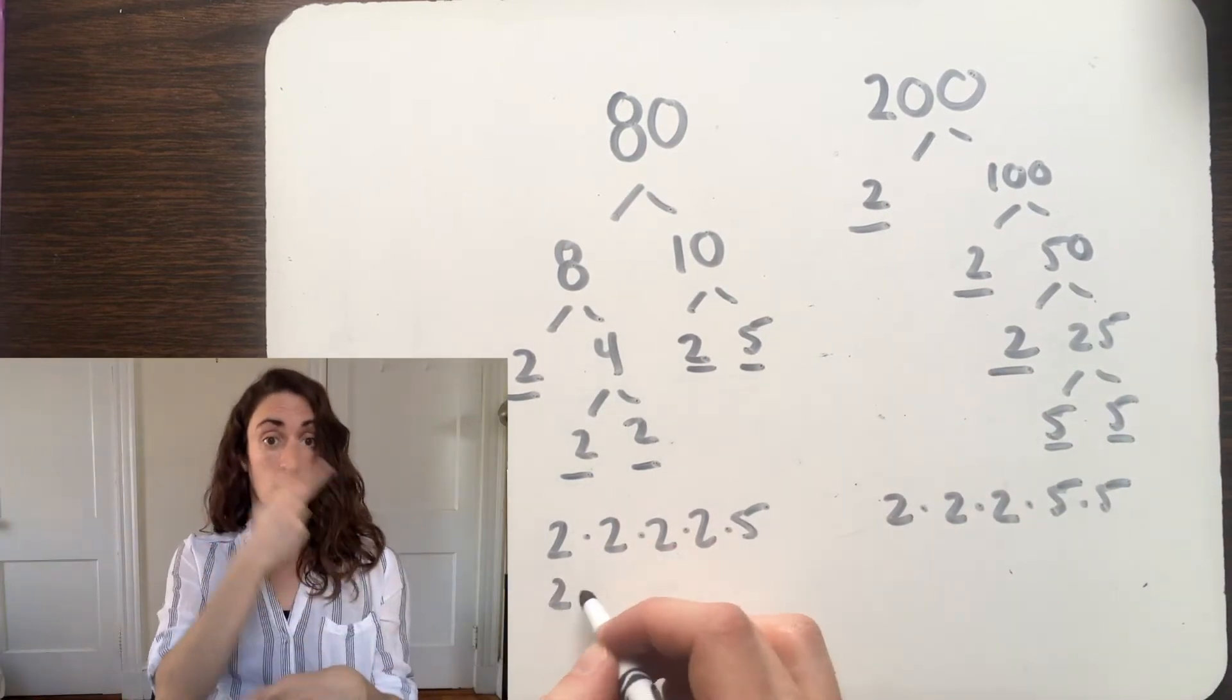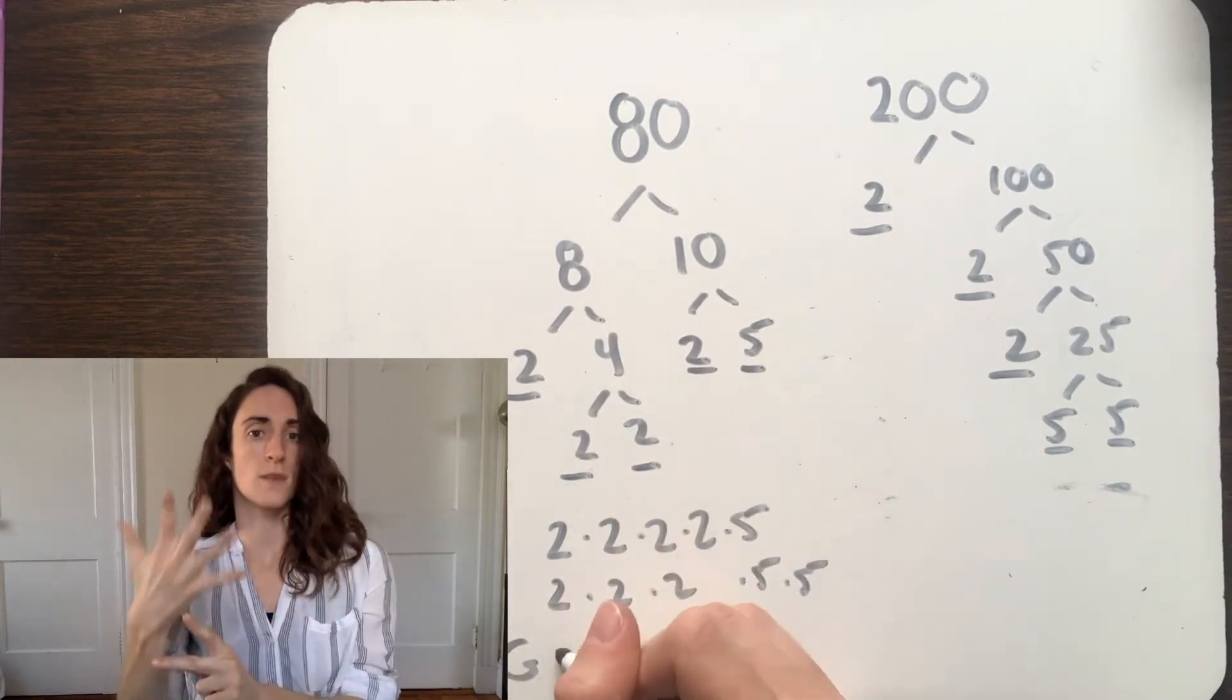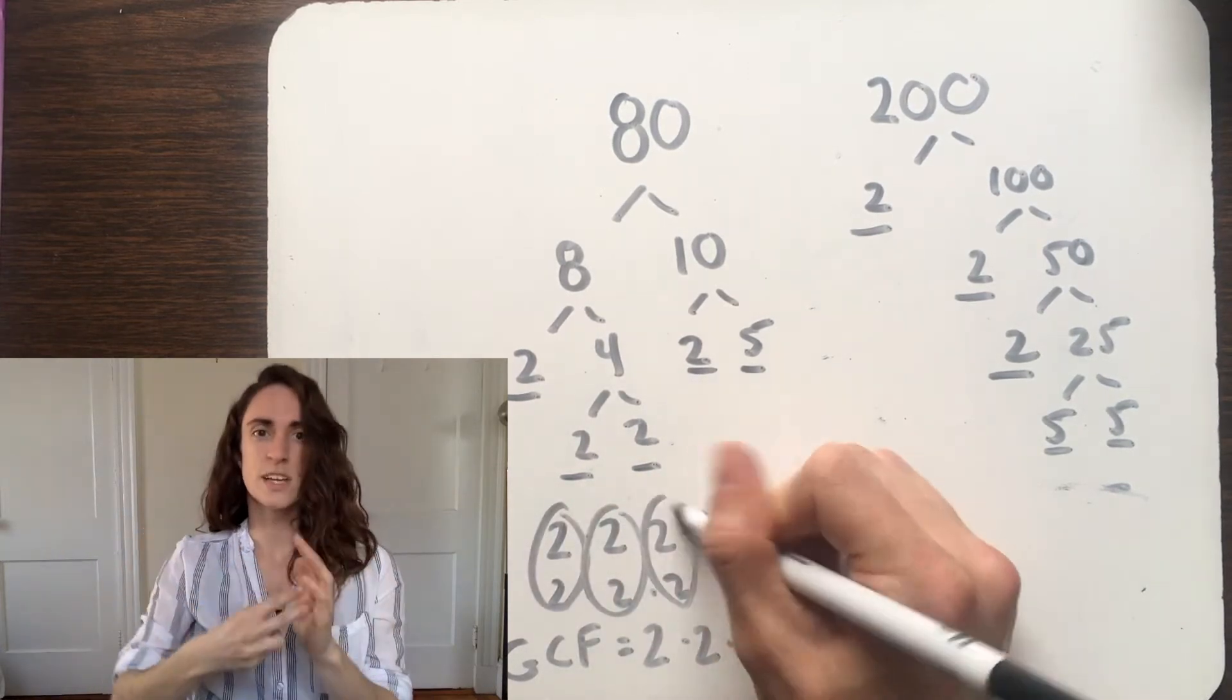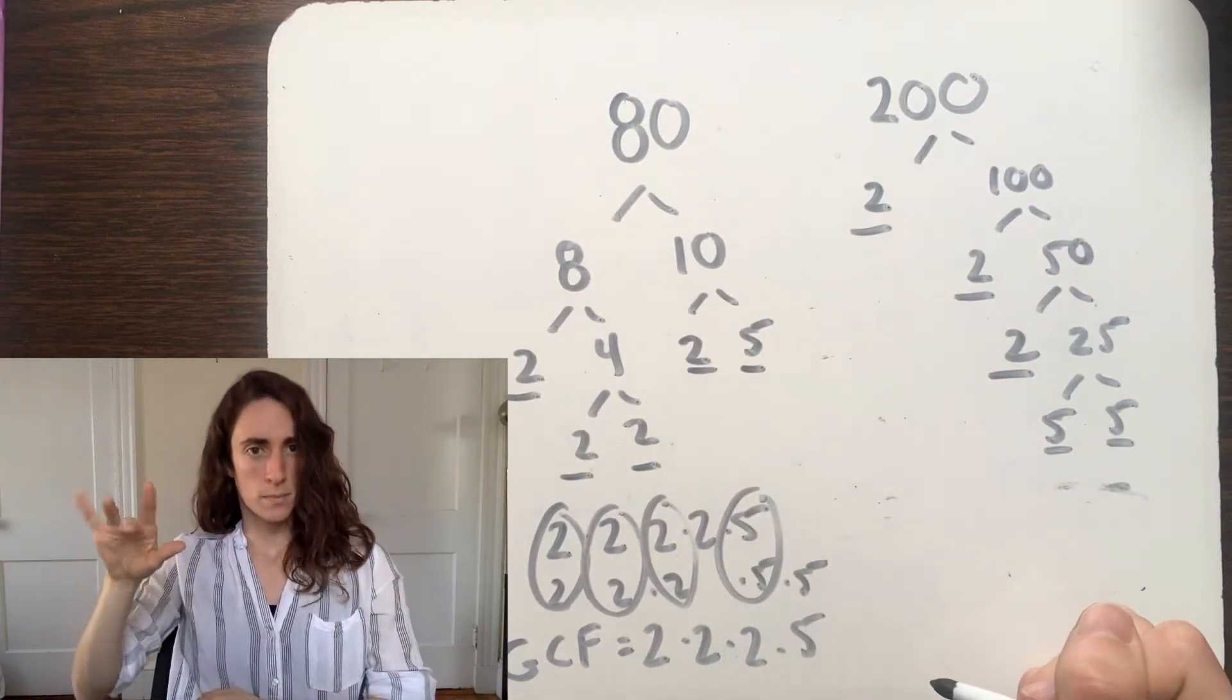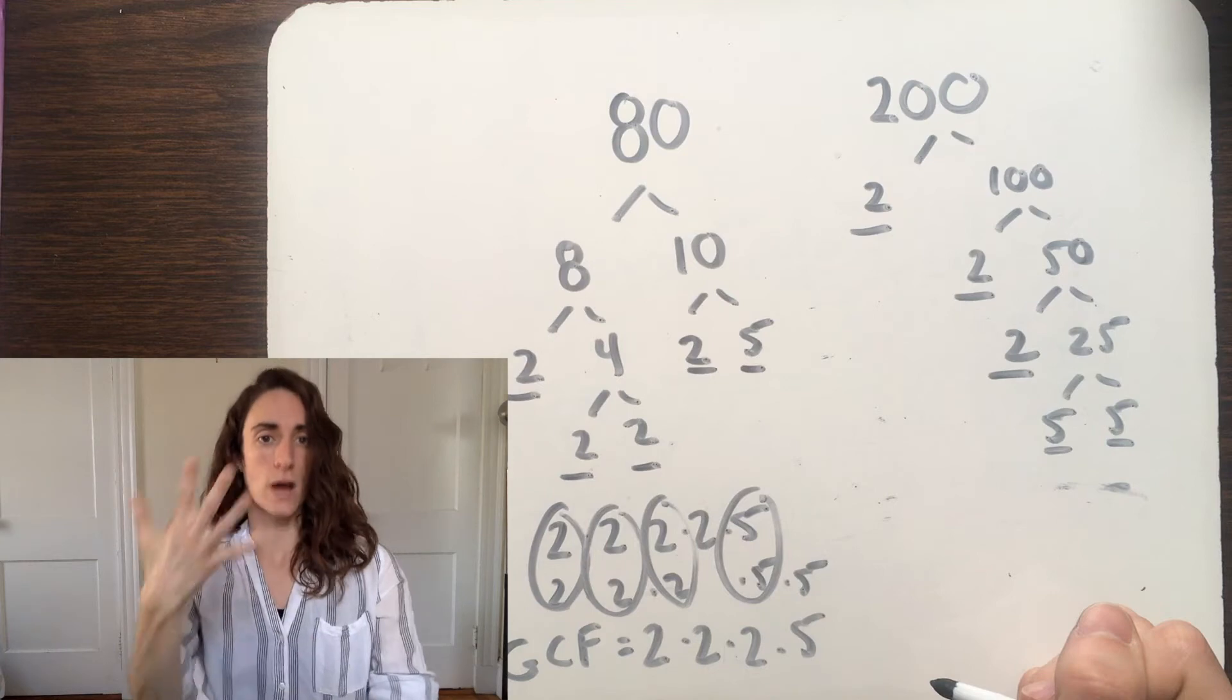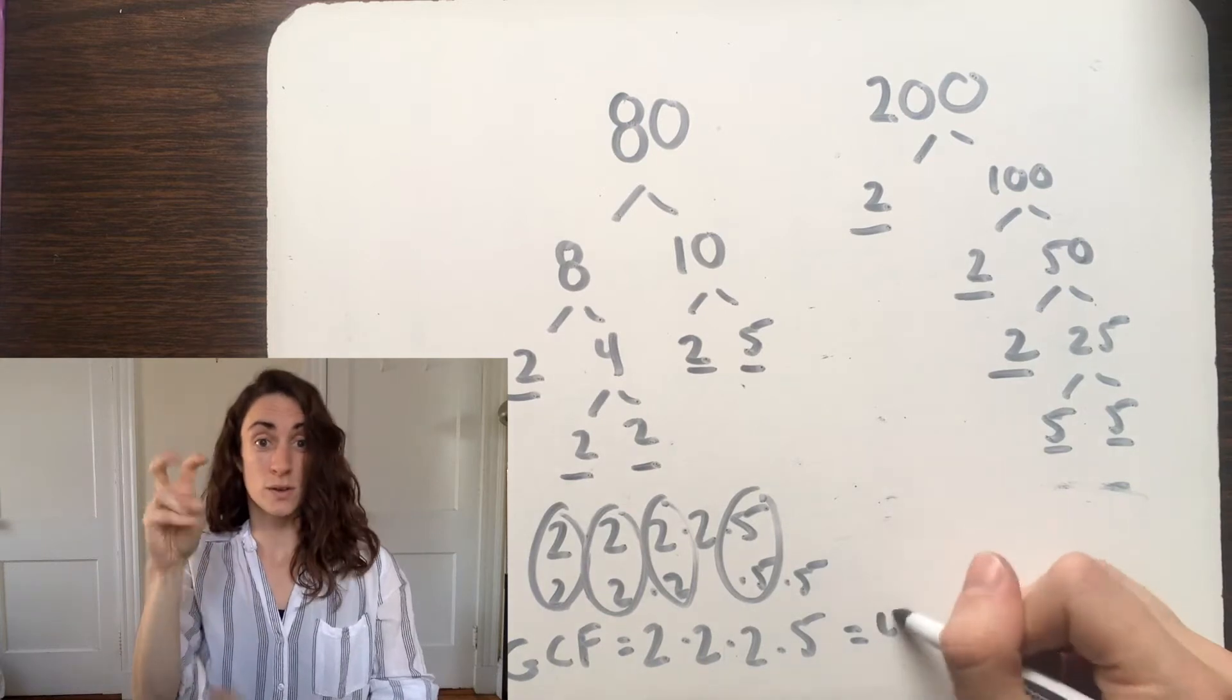Now we can compare 2 times 2 times 2 times 5, and 2 times 2 times 2 times 5 times 5. What elements of these expressions are shared? Both of them have three 2s, and while there's a fourth 2 in one expression, that doesn't show up in the second expression, so that's not a shared element. Similarly, both have one 5, but there's no second 5 in the top expression, so that's not a shared element. So the elements that they share are 2, 2, 2, and 5, the product of which is 40, the GCF of 80 and 200.